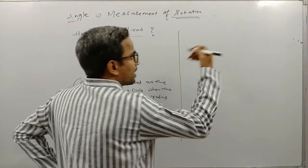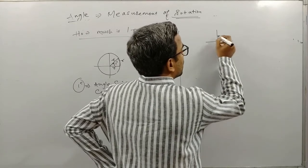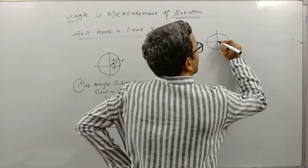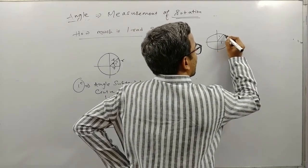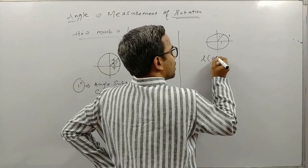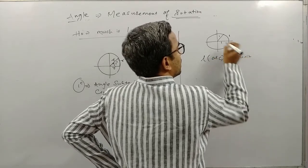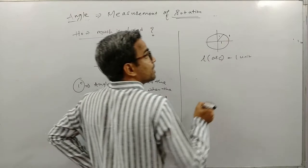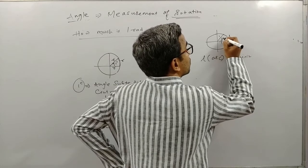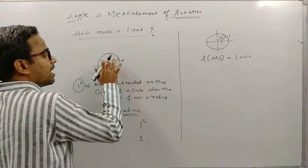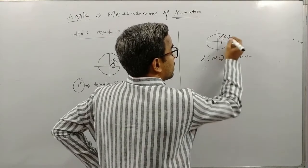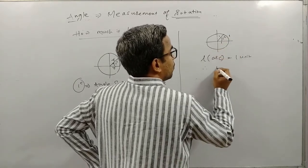Now if we consider a unit circle — a circle of radius 1 — and the length of the arc is also 1 unit, then when the length of arc is 1 unit, the angle subtended by that arc at the center is also called 1 radian.